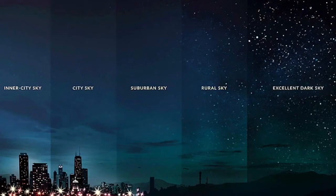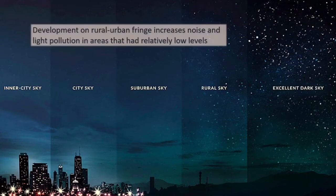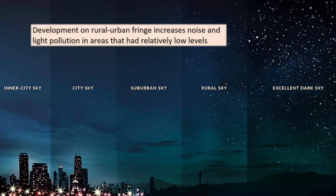The last thing to consider is that building more housing and developments on the edge of the city will generate much more light and noise pollution. We can see the stark difference between the inner-city sky and the rural sky here, and that rural sky will change rapidly as development increases on those rural edges.